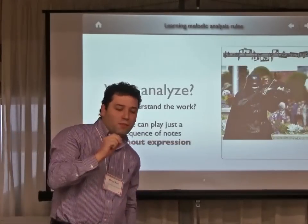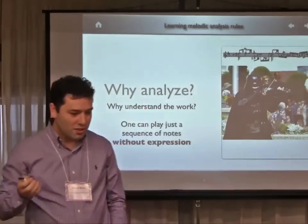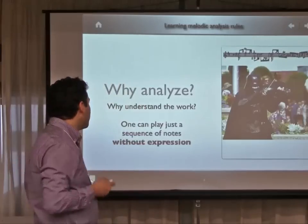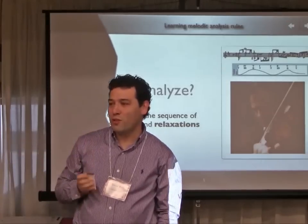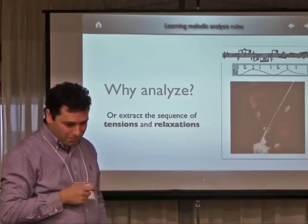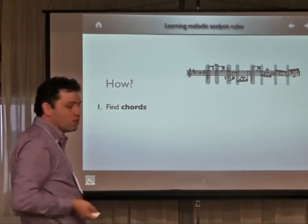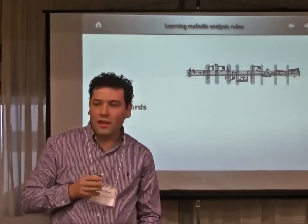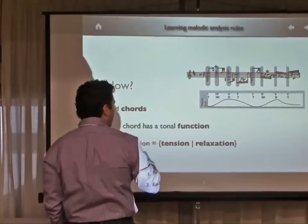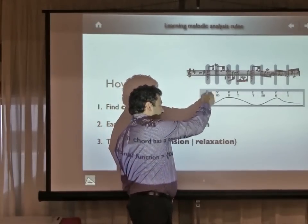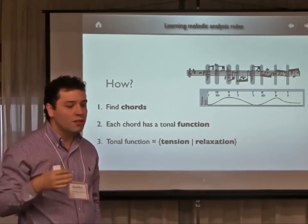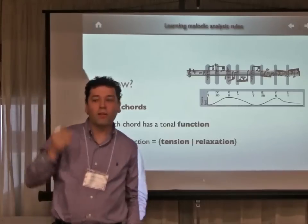In a musical work, we don't have just a sequence of notes. Not all notes have the same importance. So if we don't want to play as a robot, we need to discover the points of tension and relaxation in the work. This can be done by first finding the chords, which have a tonal function. In the case of tonic chords, we have the lower level of tension and the highest level of relaxation. In the case of dominant chords, we have the highest level of tension.